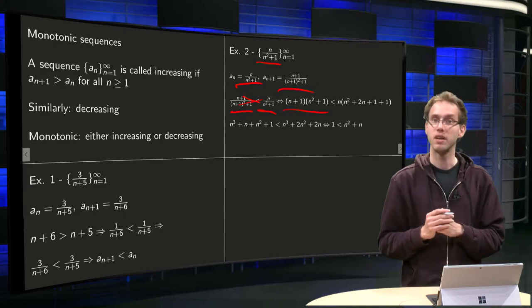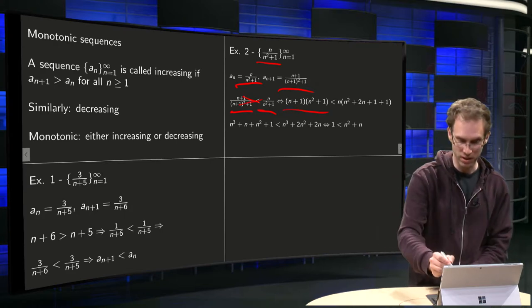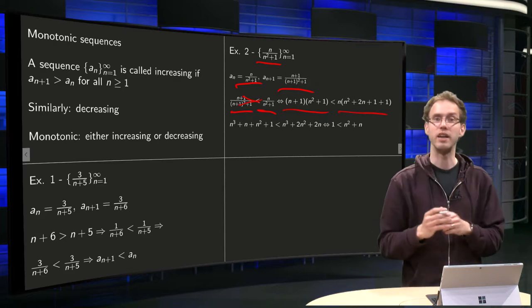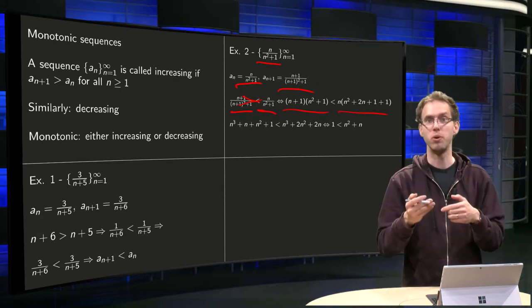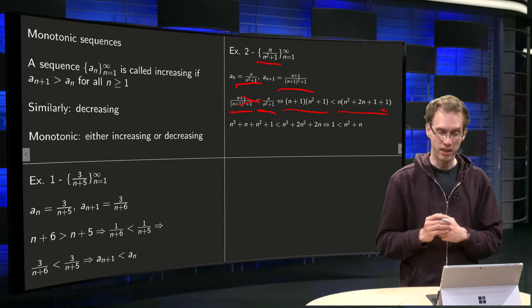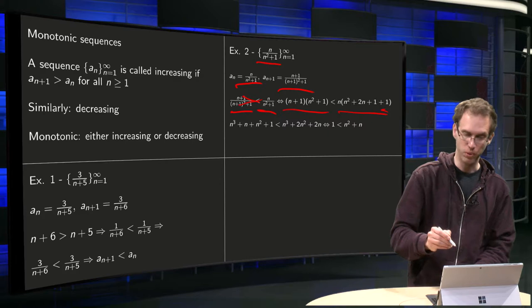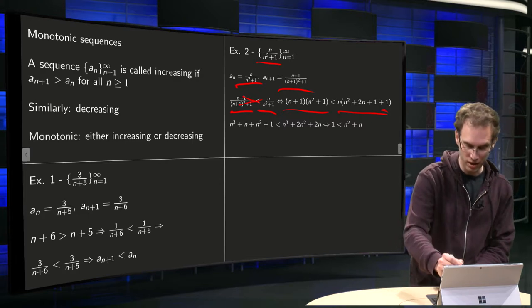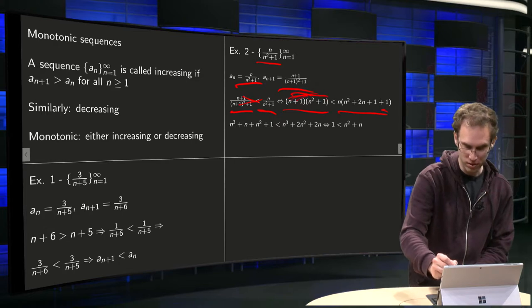(n+1) times (n²+1) smaller than n times, work out (n+1)², n²+2n+1 plus the 1 which was still there. That's equivalent to working out the brackets here.